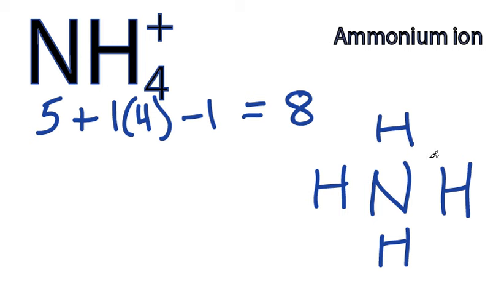Now what we want to do is put some chemical bonds here. We have 8 valence electrons, so we'll put 2, 4, 6, 8.